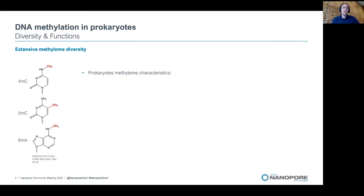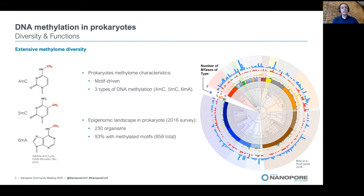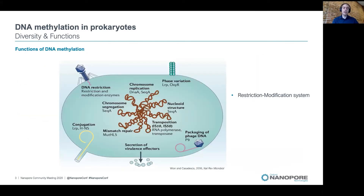In prokaryotes, the methylome has two main characteristics: it's motif-driven, and there are three types of DNA methylation — 4mC, 5mC, and 6mA. In a 2016 survey of the epigenomic landscape in 230 prokaryotes, 93% of those organisms had methylated motifs. DNA methylation in prokaryotes can play many roles; the most important and common one is within the restriction modification system. It also can play a role in DNA repair and gene regulation to a lesser extent.